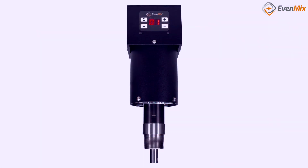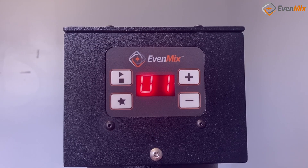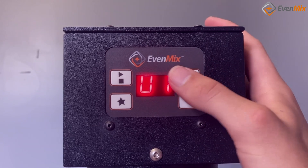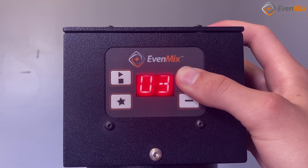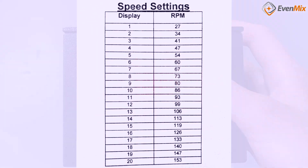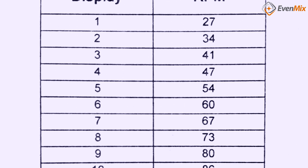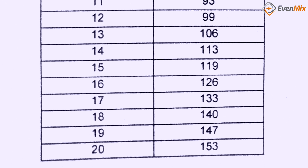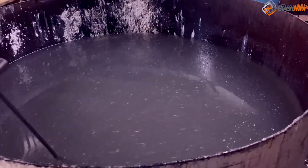Our digital motor offers an extremely precise way of measuring speed control. We have 20 speed increments from 27 to 153 RPMs. With this speed control you can easily create operating instructions for your mixing process.